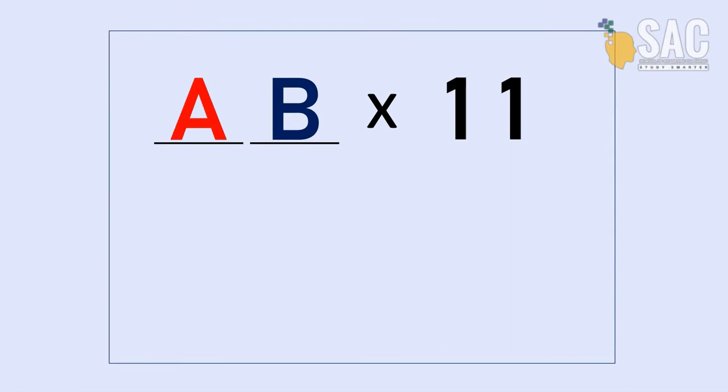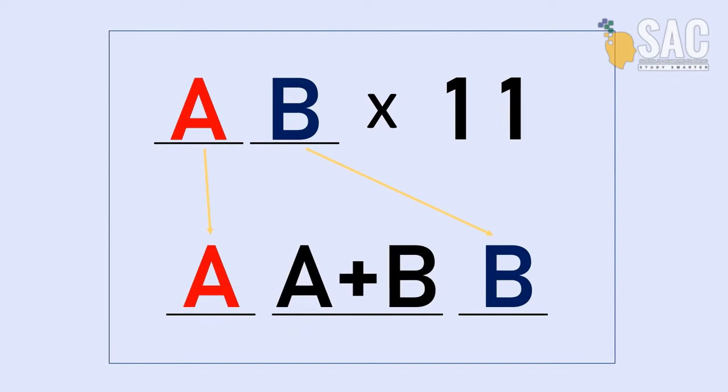So if you have two digit numbers times by 11, we just need to think about three numbers. You drag the first digit to the very front and write the second digit at the back. The middle is the sum of these two digits.